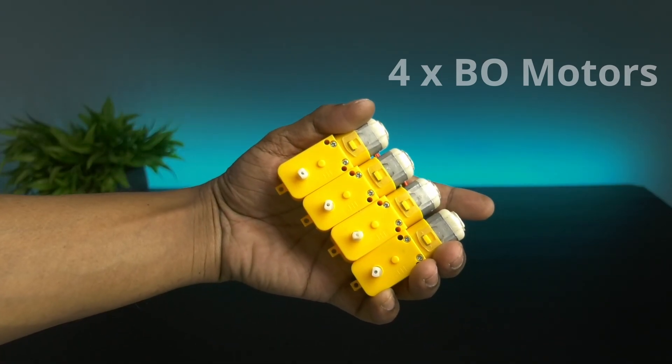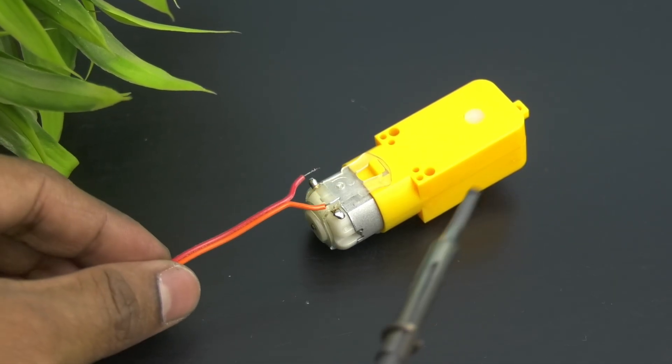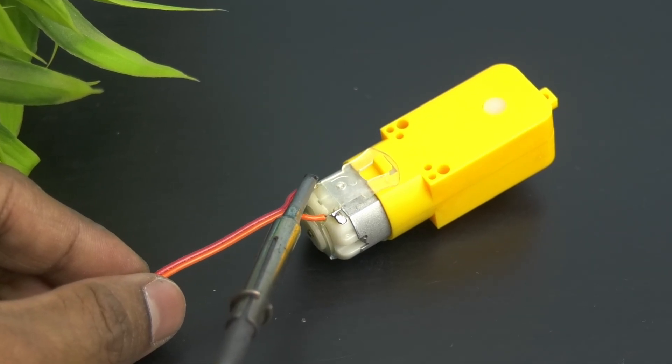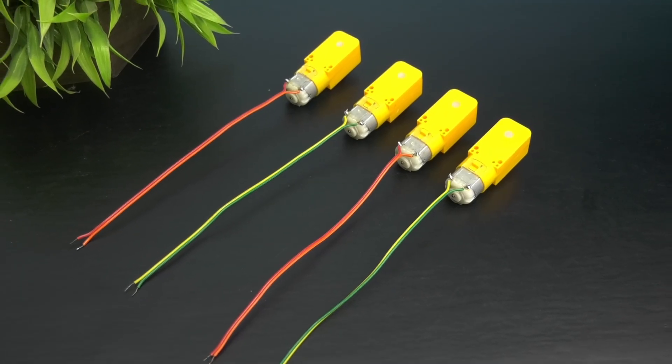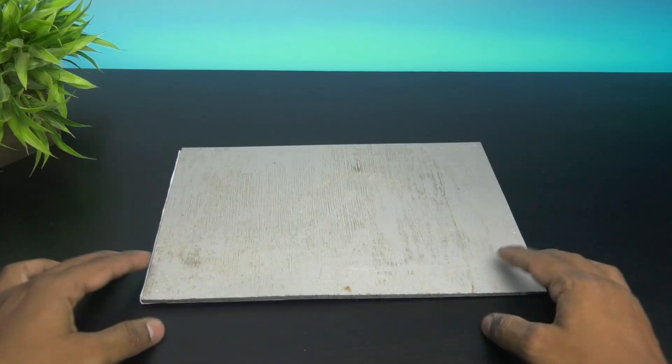Next take 4 bio motors and prepare them by soldering wire to the motor terminals. After that mount all the 4 motors in the base using hot glue.